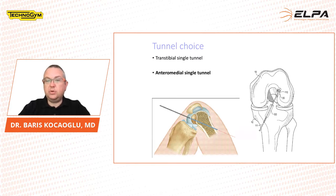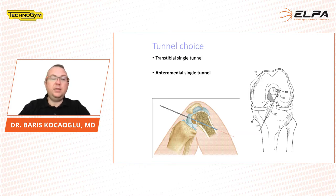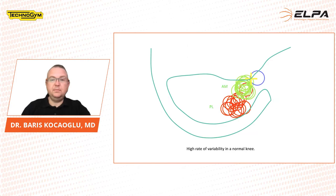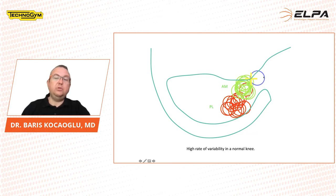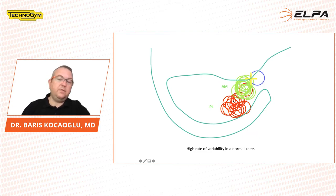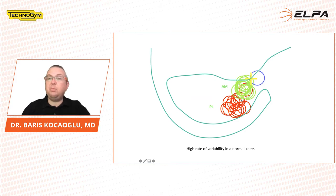Tunnel choices have also changed over many years. Ten or fifteen years ago, we used to do a trans-tibial single tunnel method, but now it has changed to anteromedial single tunnel methods. Fifteen years ago, we used an un-anatomical tunnel while doing trans-tibial methods. Nowadays, we use an anteromedial portal for placement of the femoral tunnel, and they are more anatomic. We can use double bundle methods, but double bundle has some problems with revision, so we shifted to single bundle anteromedial portal reconstruction.